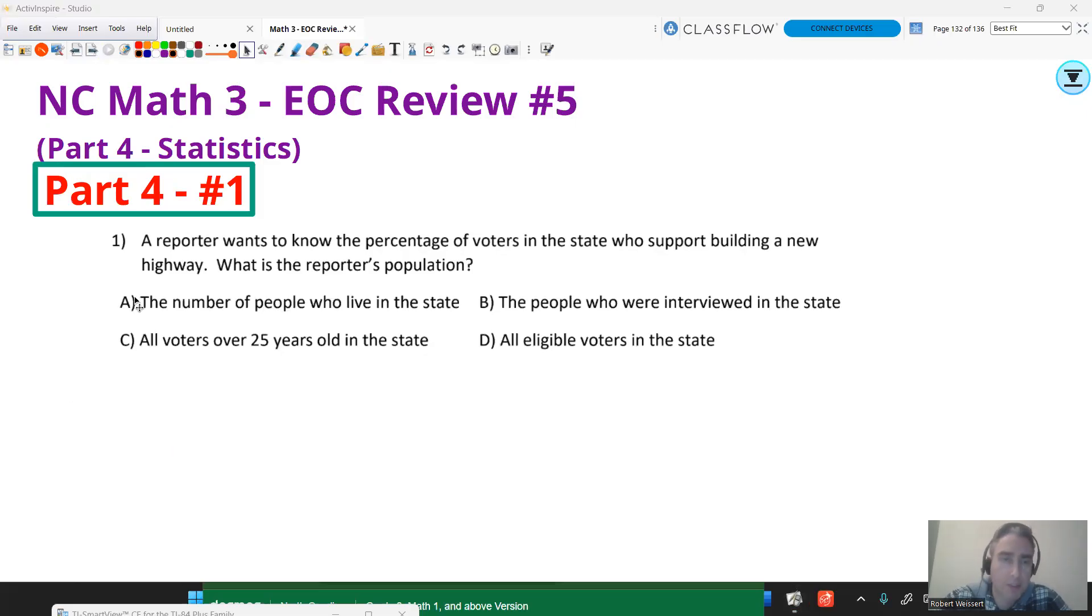So let's go over some problems here. Question number one, I hope this is common sense. Read through it. A reporter wants to know the percentage of voters in the state who support building a new highway. What is the reporter's population? And a population is who you're trying to sample from. So population is not the sample itself, but who you're sampling from. And who are we sampling from?